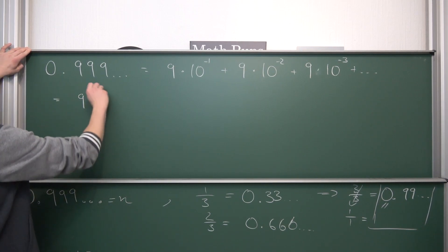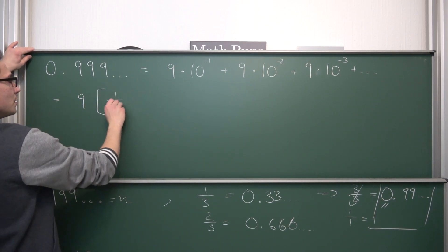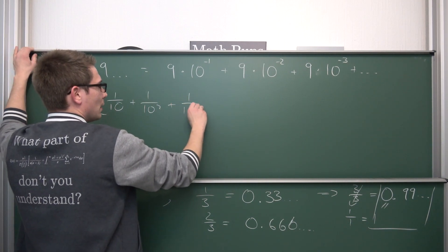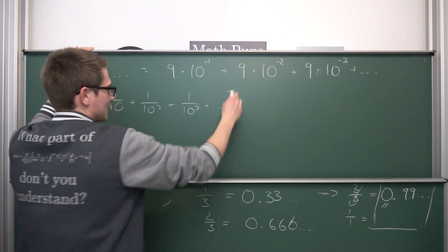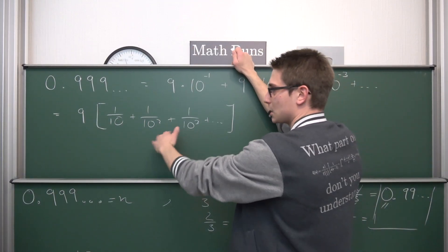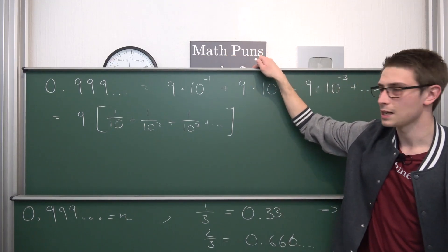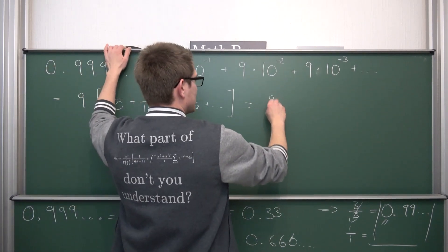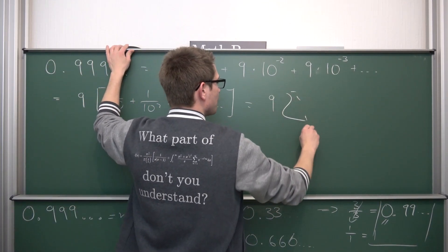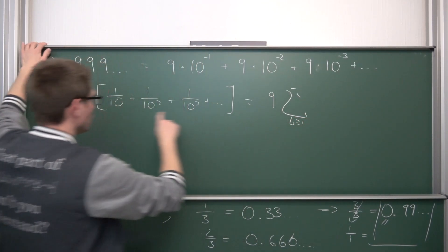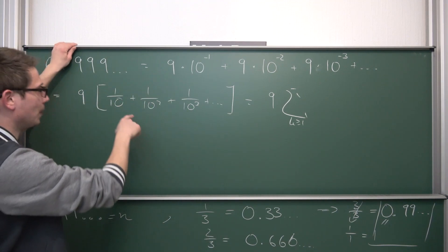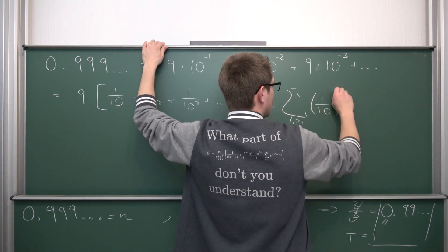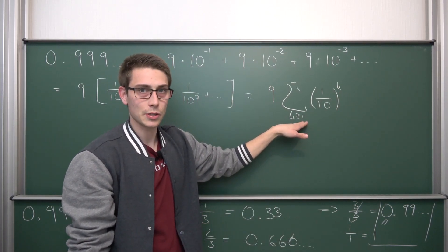Of those repeating decimals, now you are going to notice that 9 is a common factor, giving us overall 9 times, and now we are going to have 1 over 10 plus 1 over 10 squared plus 1 over 10 to the 3rd power plus da da da up until infinity. And this right here is just a geometric series, which is really nice. So let us rewrite this a little bit more into summation notation to make it a bit more clear. What we got here is 9 times a sum where k is greater or equal to 1, because we are starting off with 10 to the 1st power down here in the denominator. So 1 over 10 to the kth power.